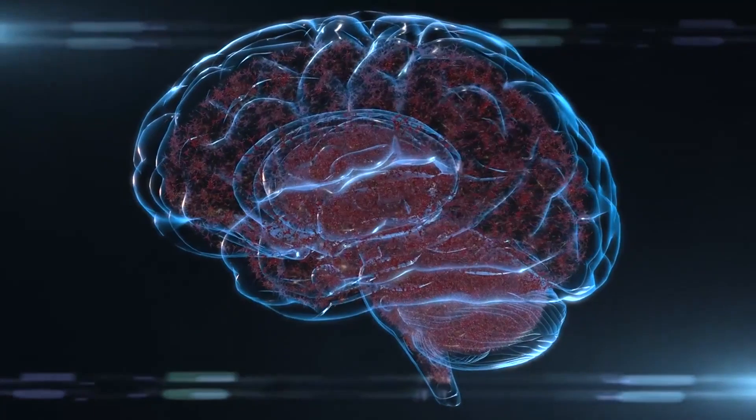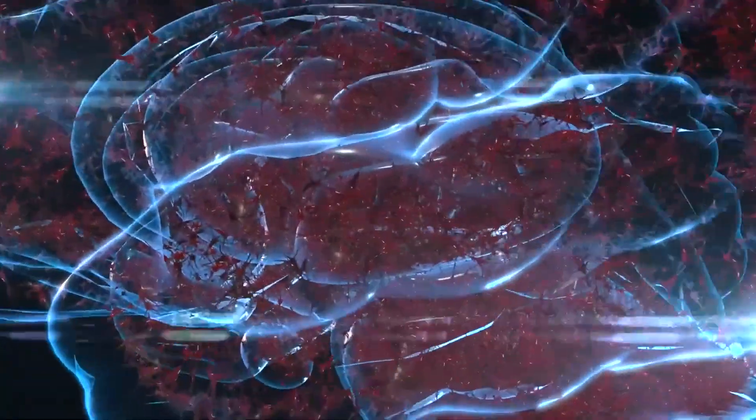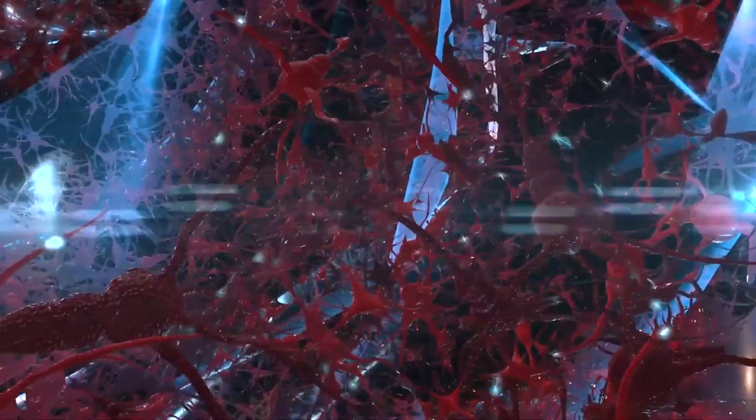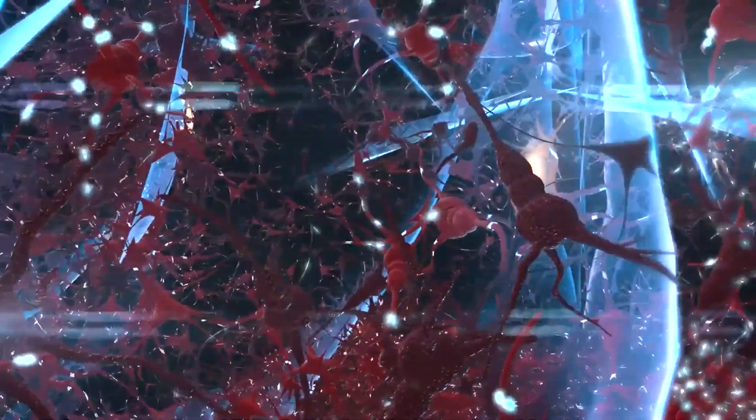Interconnection of Systems: PNIE recognizes that the nervous system, the immune system, and the endocrine system are interconnected and communicate with each other through a complex network of signals and chemical messengers.